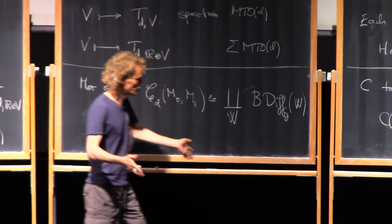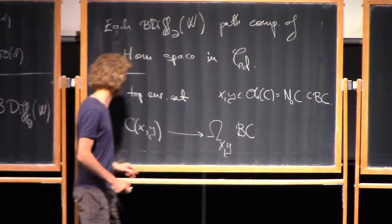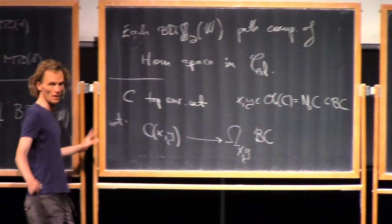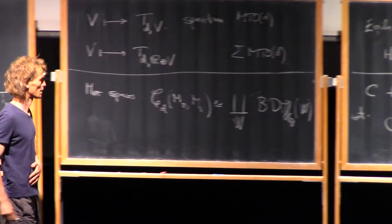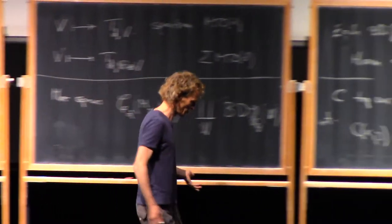A morphism from x to y gives you, by definition, a one simplex, and this is a continuous map. Okay, so that's kind of a universal thing we always have.